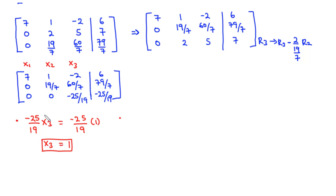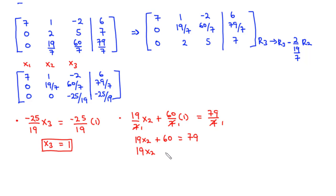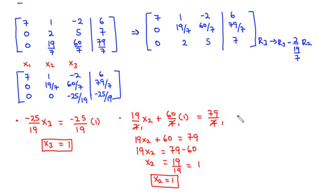Moving to row two and substituting x3 = 1: (19/7)·x2 + (60/7)·1 = 79/7. Cancelling the common factor of 7 gives: 19·x2 + 60 = 79. Transposing 60 to the right-hand side: 19·x2 = 79 − 60 = 19. Dividing by 19, we get x2 = 1.